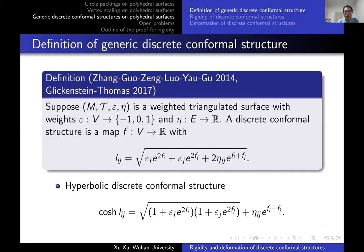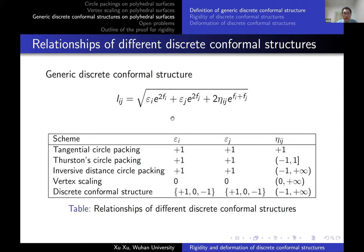Comparing with existing discrete conformal structures: if all ε_i are zero, the generic discrete conformal structure reduces to the inversive distance circle packing. We know that vertex scaling has global rigidity, and inversive distance circle packing has global rigidity. A natural question is: does this generic discrete conformal structure also have some form of rigidity?